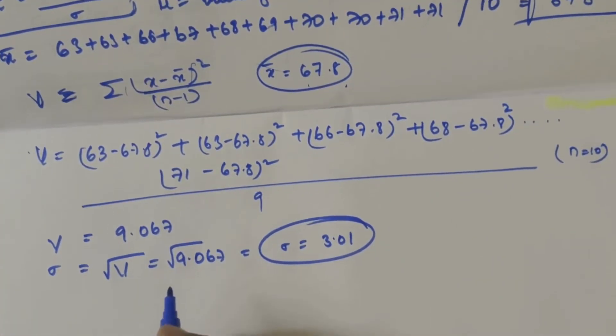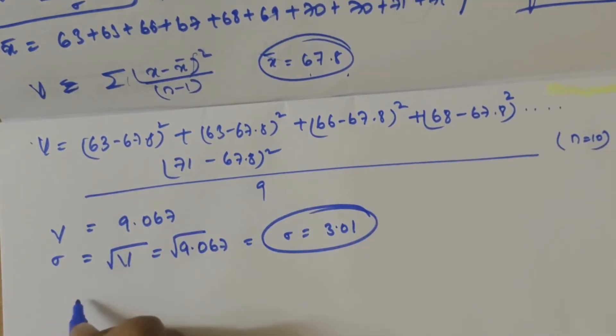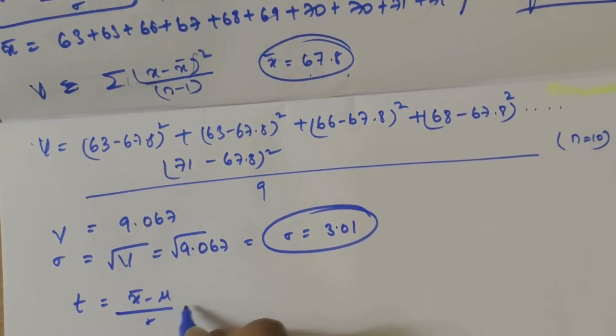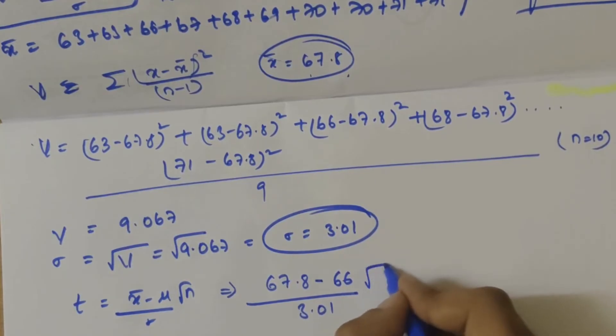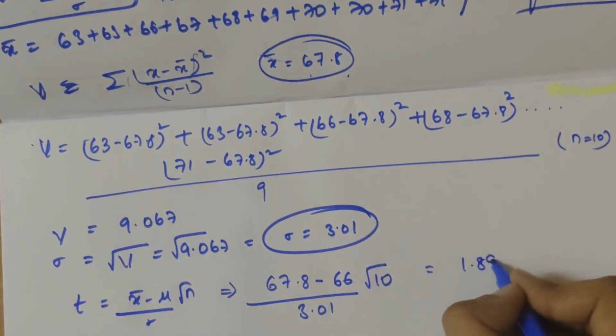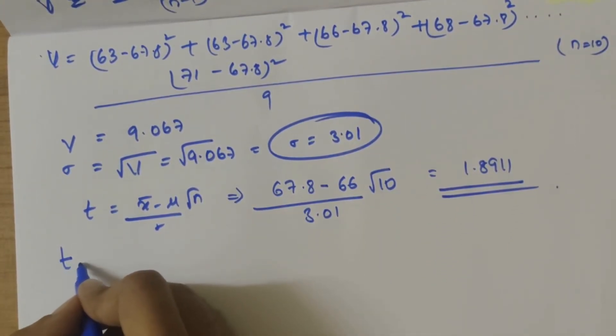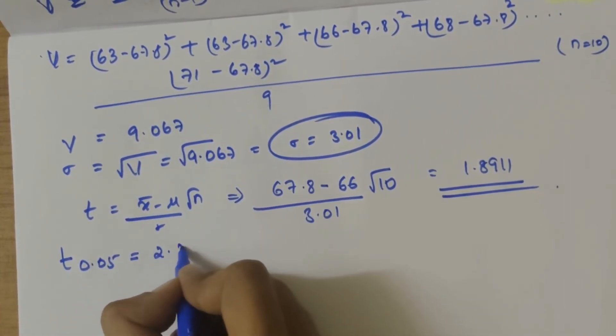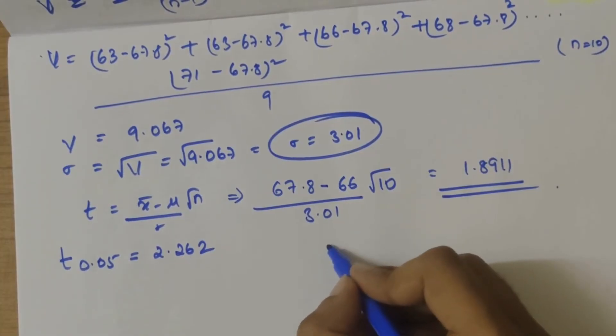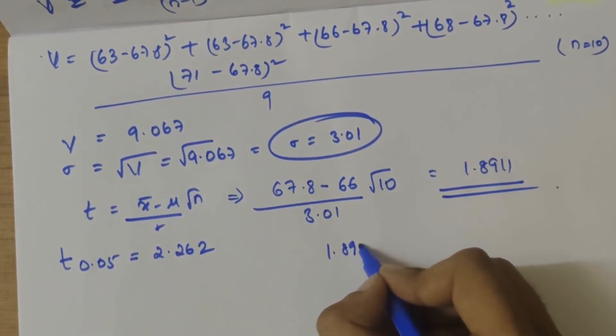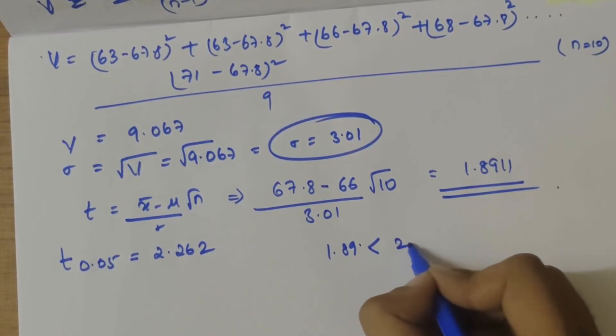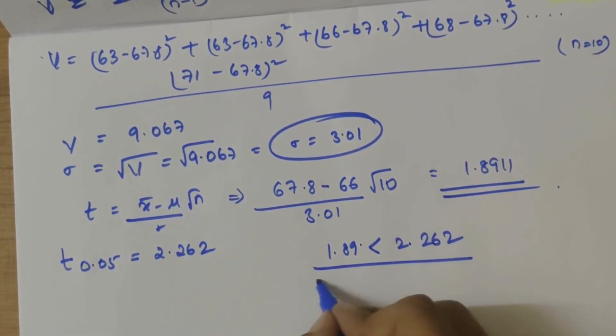Now substituting the values in the t equation: t equals x̄ minus mu by sigma into root n. Here x̄ value is 67.8, mu value is 66, sigma value is 3.01, n value is 10. Under root 10, if you solve it you get 1.8911. The significance value t of 0.05 is 2.262. So 1.89 is less than 2.262, therefore the hypothesis is accepted at 5 percent level of significance.